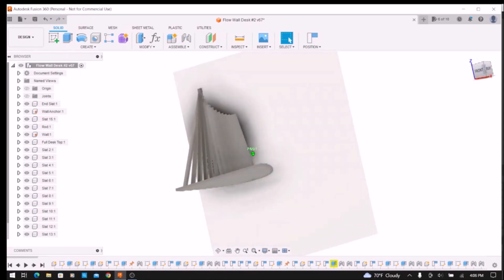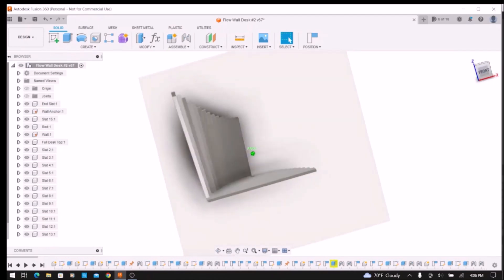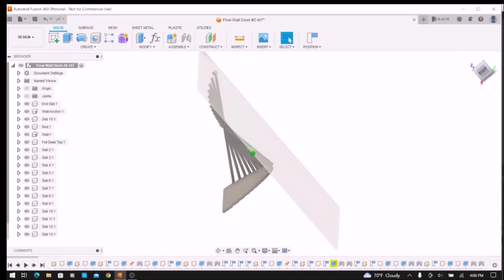At the bottom of each slat where it connects to the desktop is a revolving joint, and in the middle of each slat where it meets the rod is a joint type known as pin slot. We'll see that closer in a minute.